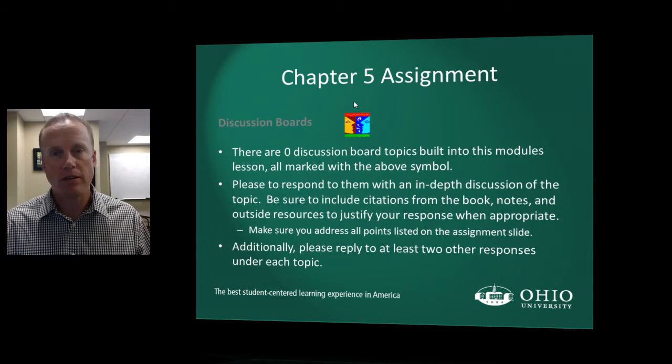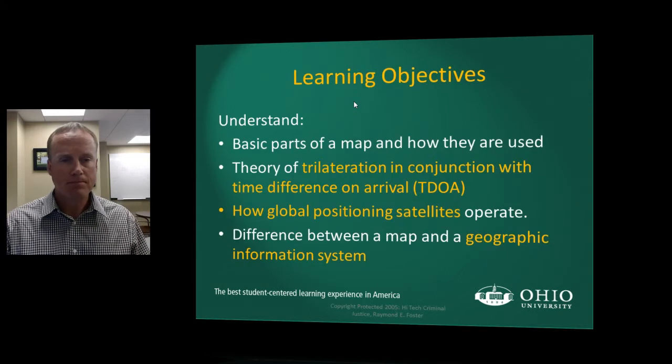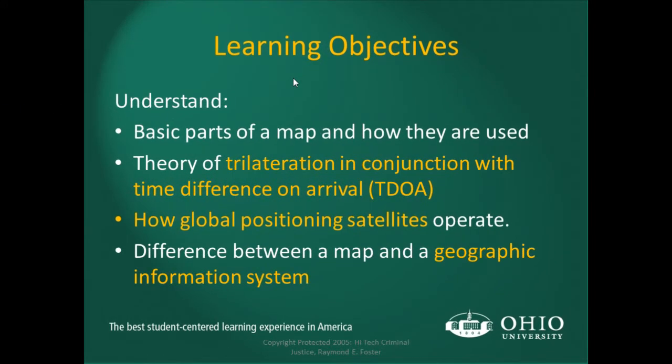Make sure you know where the information is for the quiz. Some of the learning objectives in this chapter: we're going to talk about basic parts of a map and how they are used, the theory of trilateration in conjunction with TDOA — or time difference on arrival — to determine location, and how global positioning satellites operate.